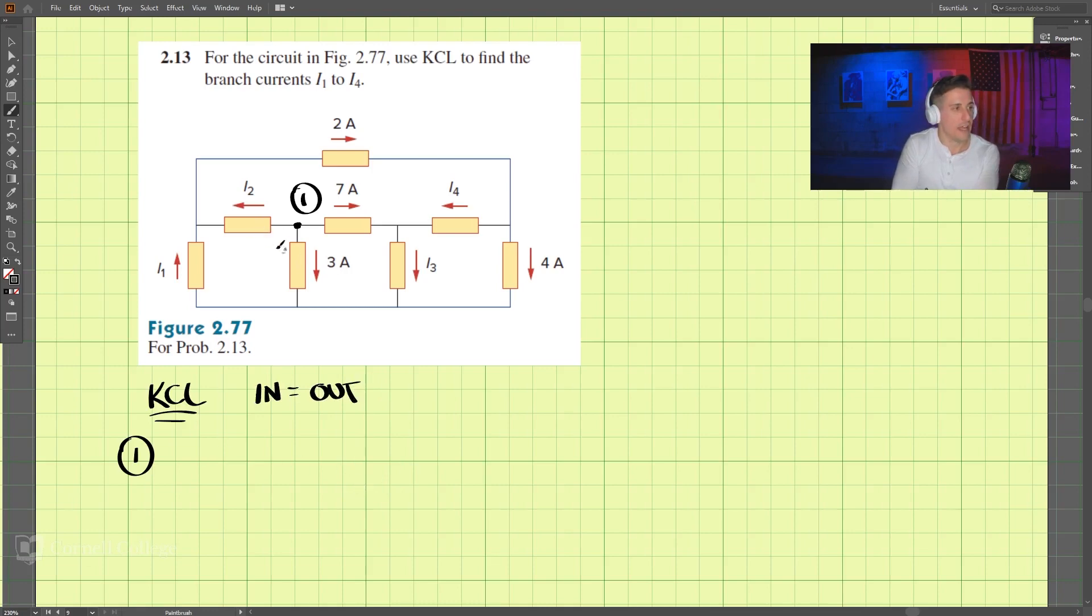So we have in, we have 0, all of these are going out. And we have out, we have I2 plus 3 plus 7. So I2 is equal to negative 10 amps.